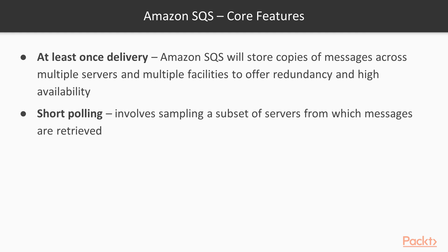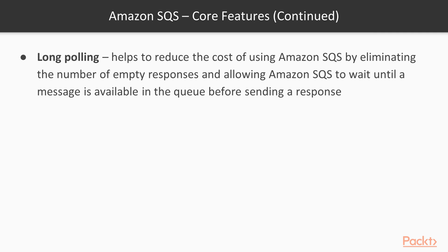Short polling involves sampling a subset of servers from which messages are retrieved, meaning some messages may remain on servers not polled in the initial request — subsequent polling then retrieves the remaining messages. However, short polling can be CPU intensive for your application. Long polling helps reduce the cost of using Amazon SQS by eliminating empty responses and allowing SQS to wait until a message is available in the queue before sending a response.